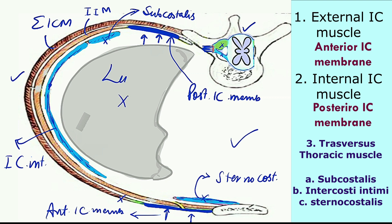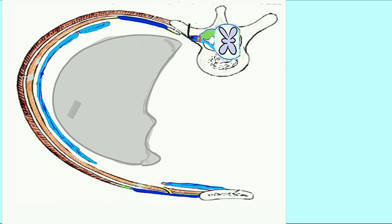Here we have the lungs. The intercostal nerve is the continuation of the ventral ramus. Initially, the intercostal nerve is present between the subcostalis muscle and the parietal pleura. After this, it moves toward the intercostal space and lies between the internal intercostal muscle and the innermost intercostal muscle.